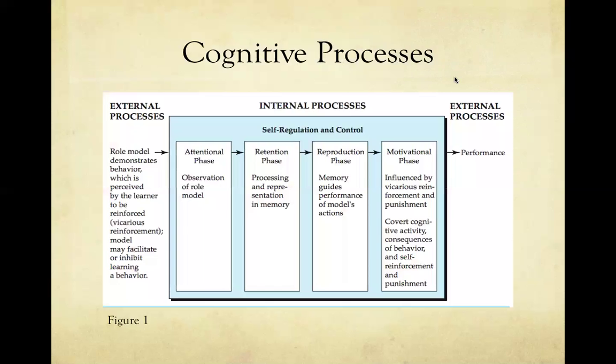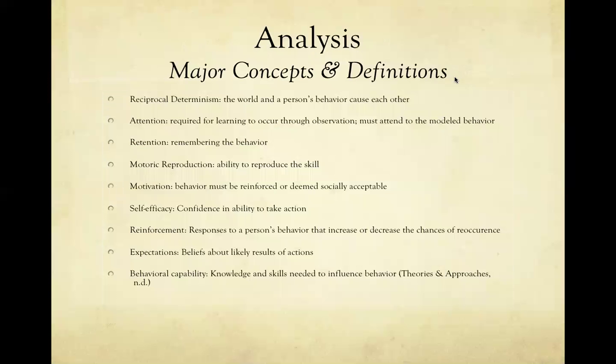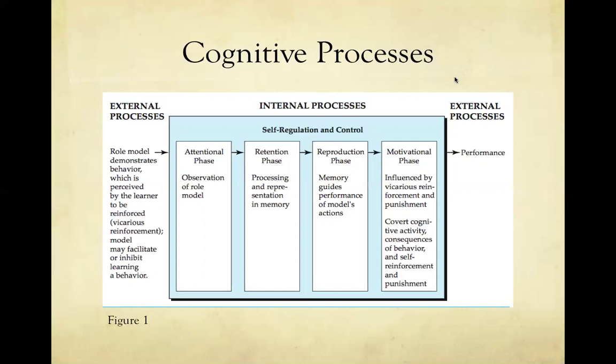This is a schematic that explains the steps in the social learning theory process. The external forces are present when a learner observes a model's behavior being reinforced, which is also called vicarious reinforcement. The learner then self-regulates by providing attention to the model, remembering the behavior, reproducing and practicing the behavior, and finally the learner is motivated to perform or not perform the behavior based on the outcome observed.